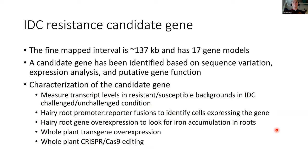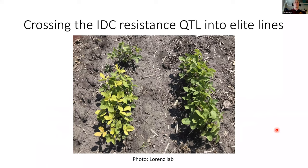One last thing about IDC: Ryan has been doing work showing that when the Fiskeby III allele is backcrossed into a recently released soybean breeding line susceptible to IDC, the Fiskeby III QTL on chromosome 5 shows about a one-point improvement in the standard IDC scoring system over susceptible plants. So this allele is being used and integrated, hopefully successfully, into breeding populations in a more purposeful way.